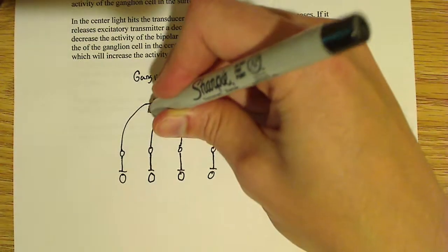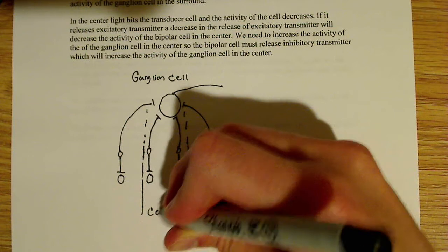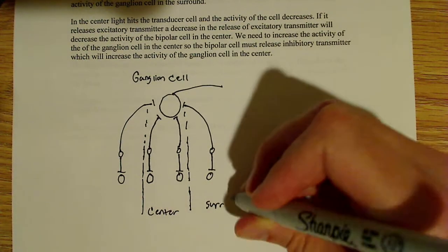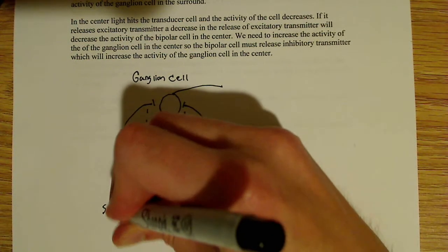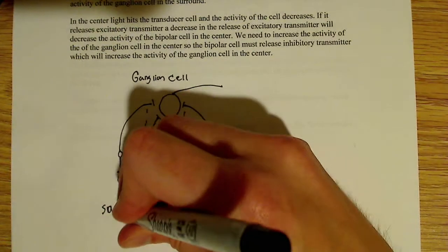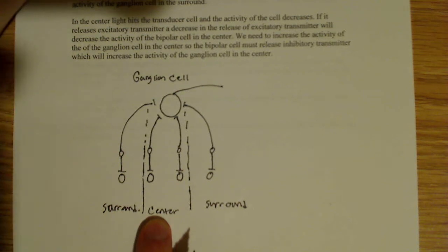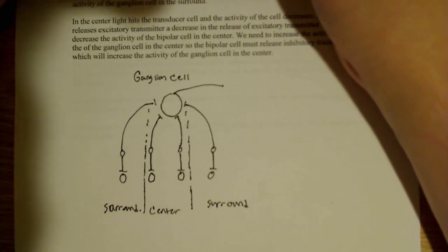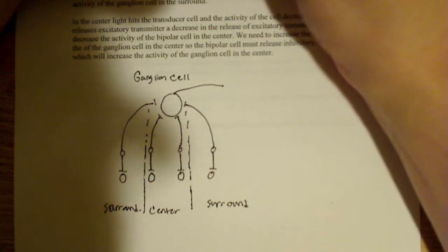I want to put a line in here to divide these two spaces. This is going to be the center, and this is going to be the surround. So we have the surround on the outside, we have the center in the middle, and we have essentially just four cells — though there are many more in the case of an actual one. But to show this, I just kind of do it this way.